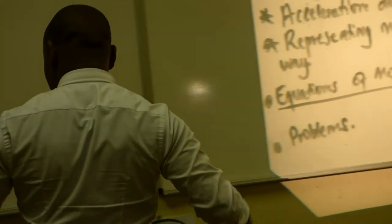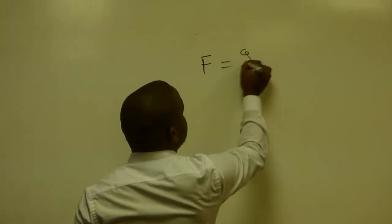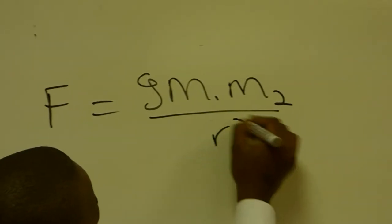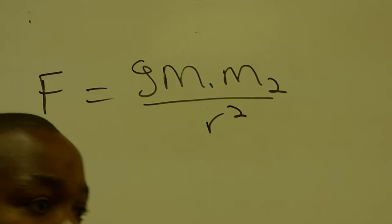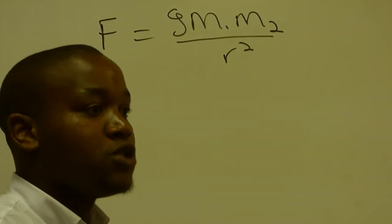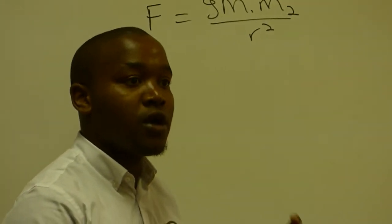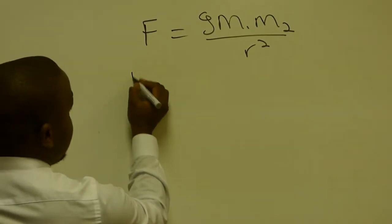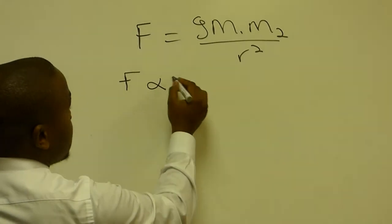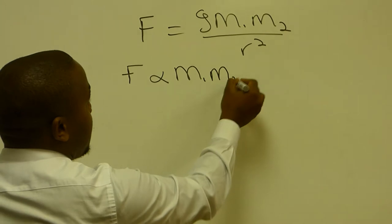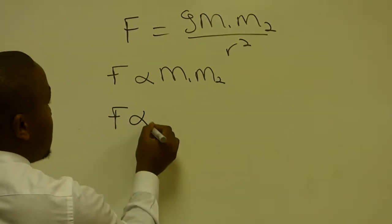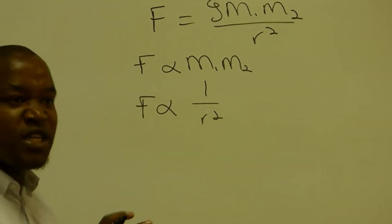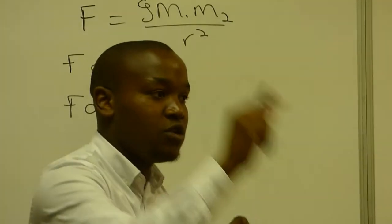In grade 11 we denoted force of gravity as G·M1·M2 / R². We said force of gravity is directly proportional to the product of the masses and inversely proportional to the square of the distance between those two objects. F is directly proportional to mass 1 times mass 2, and F is inversely proportional to the square of the distance. If I increase the mass of an object, the force of gravity acting on that object will be more.